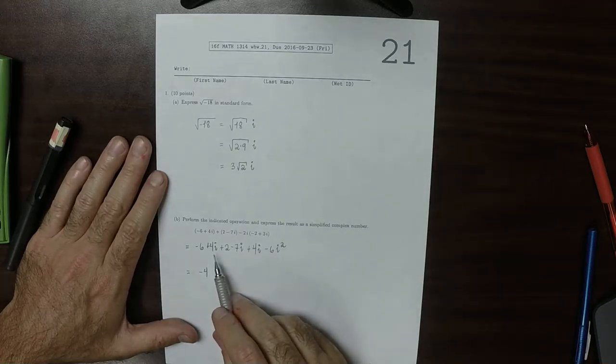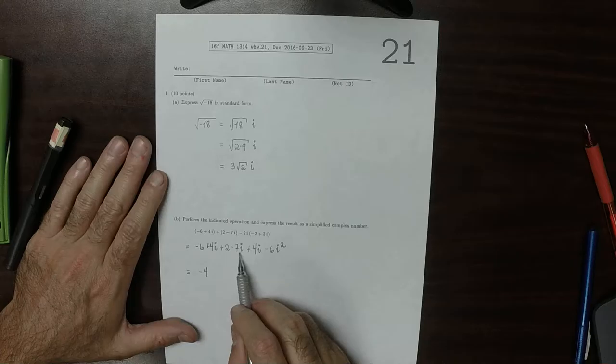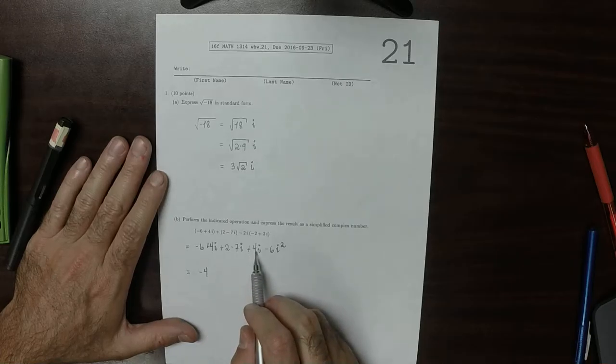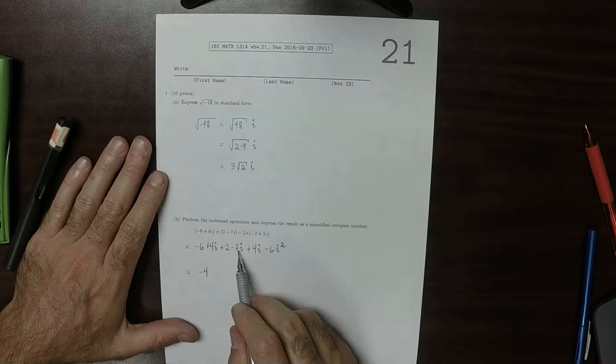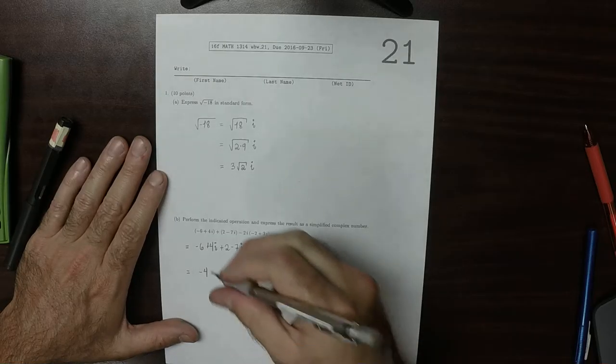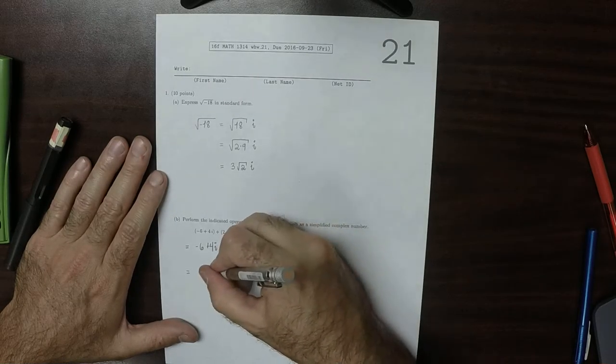And then 4i, well, 4i plus another 4i, that would be 8i, minus 7i would be 1i. So plus i.